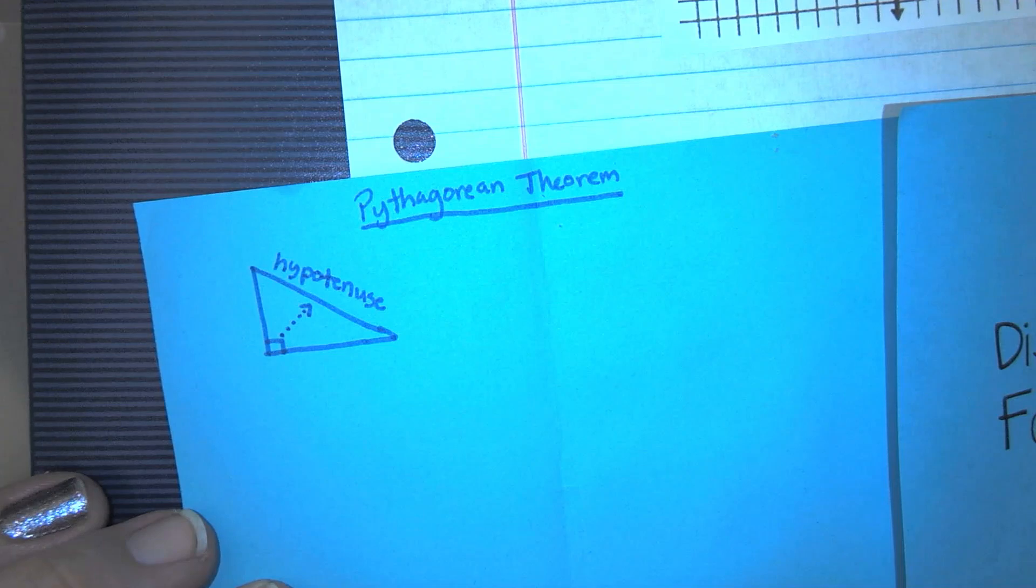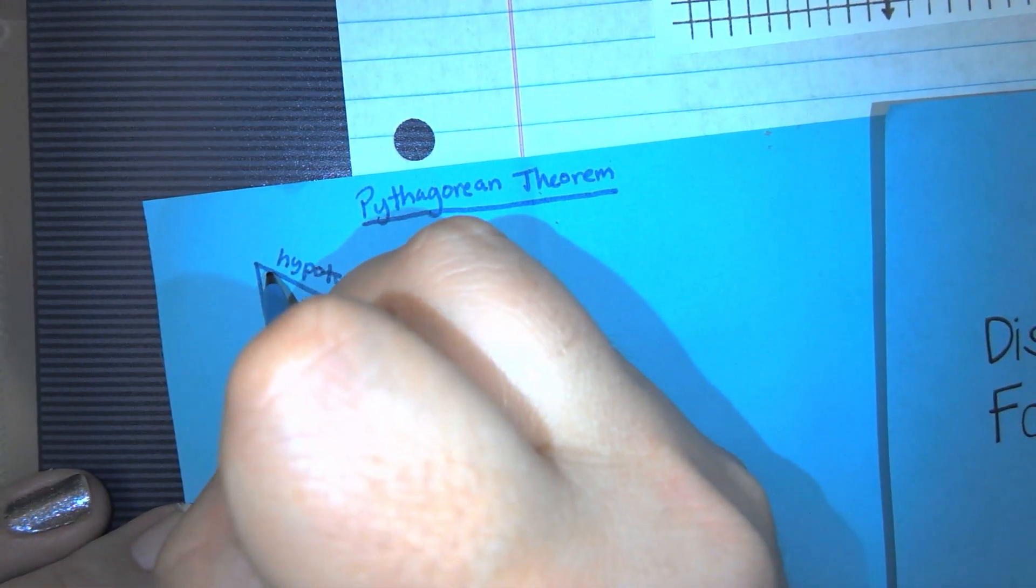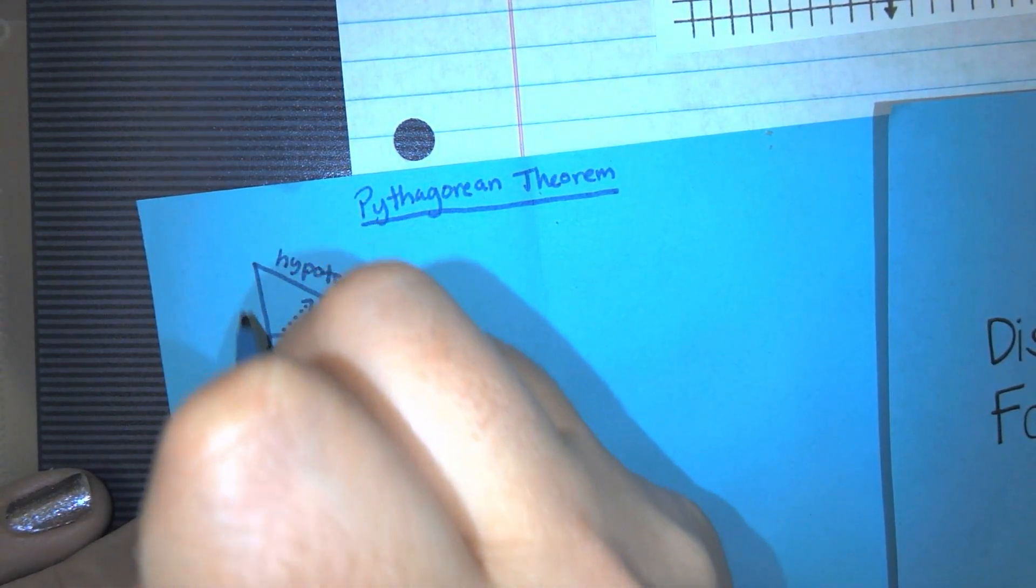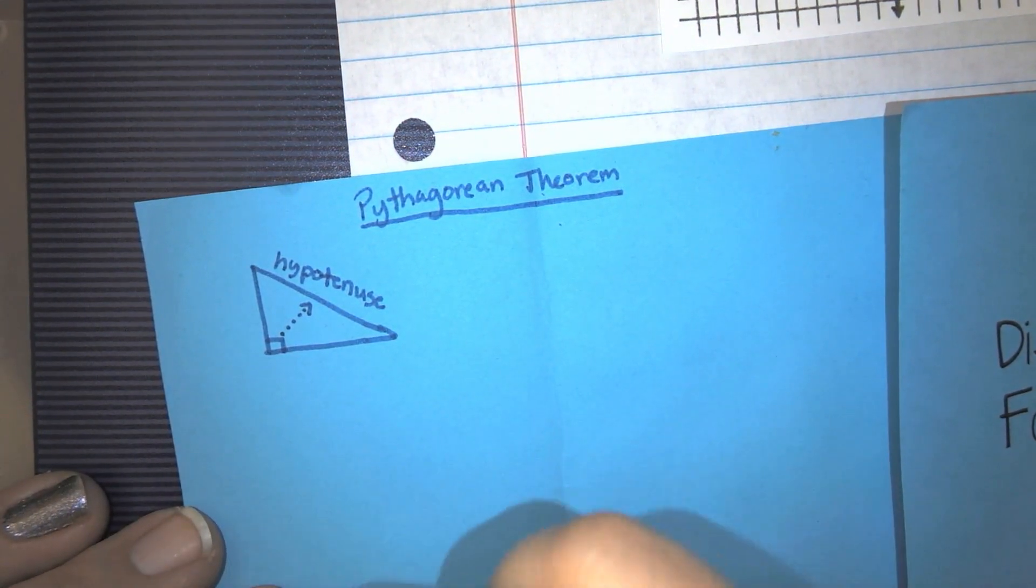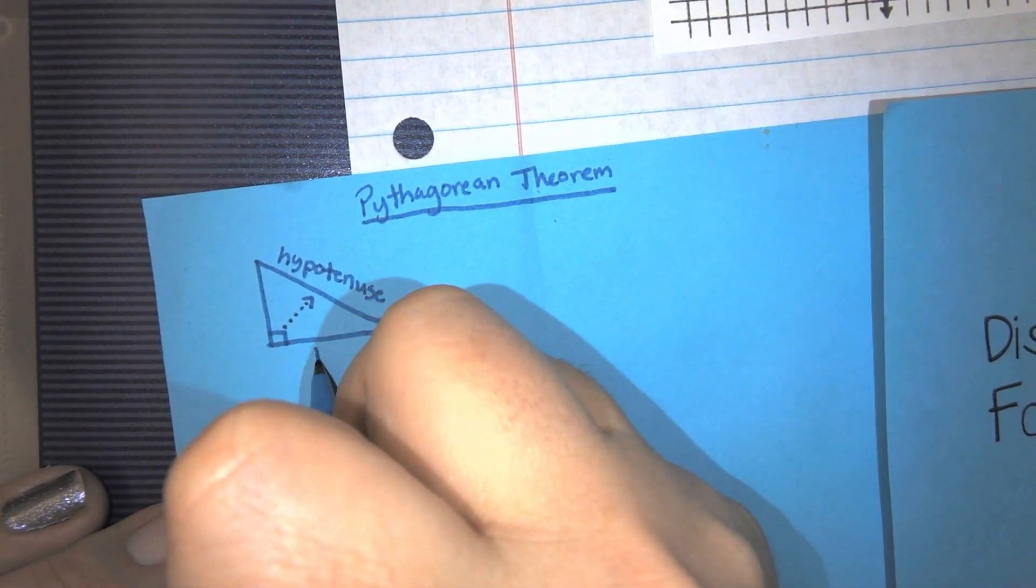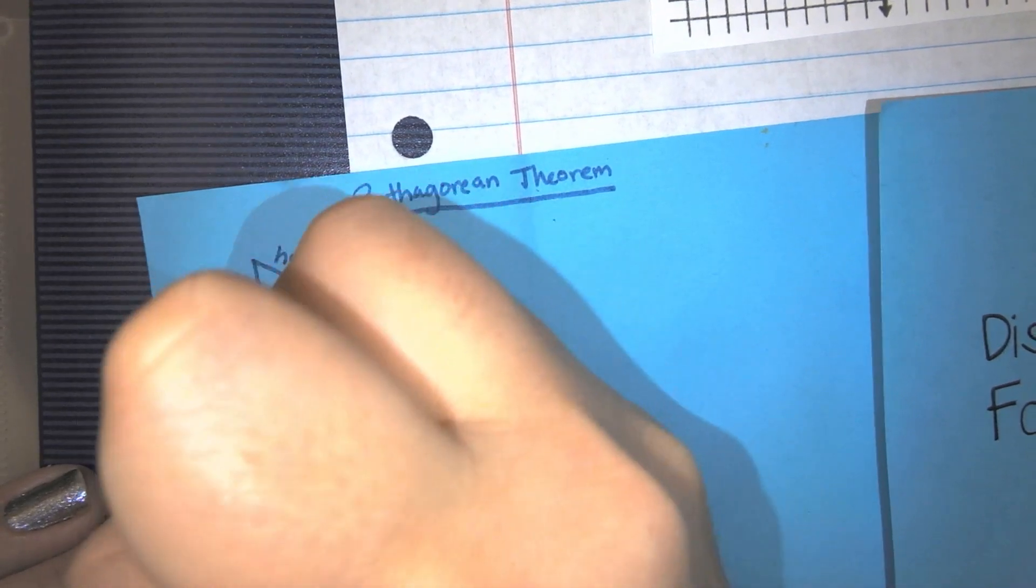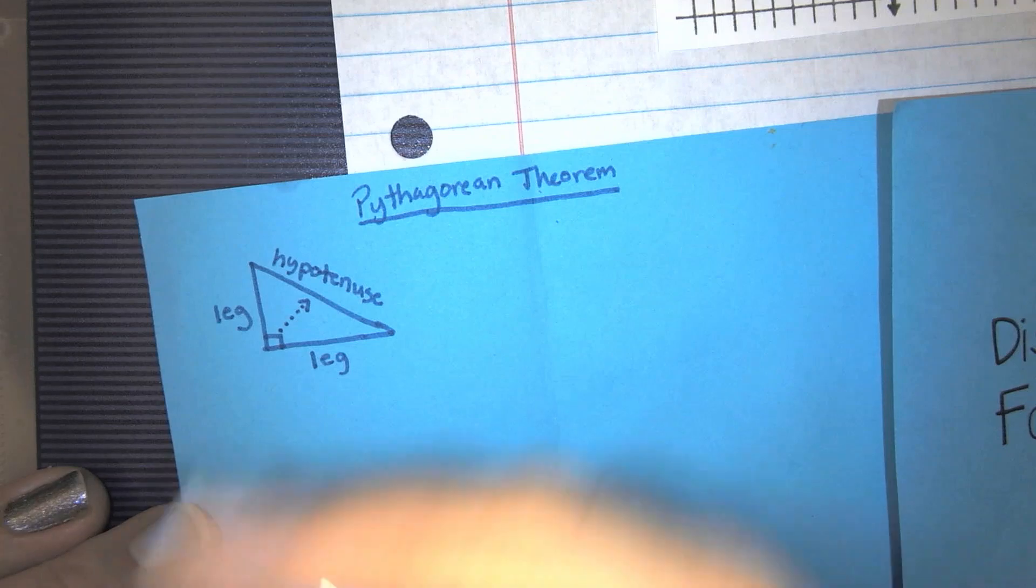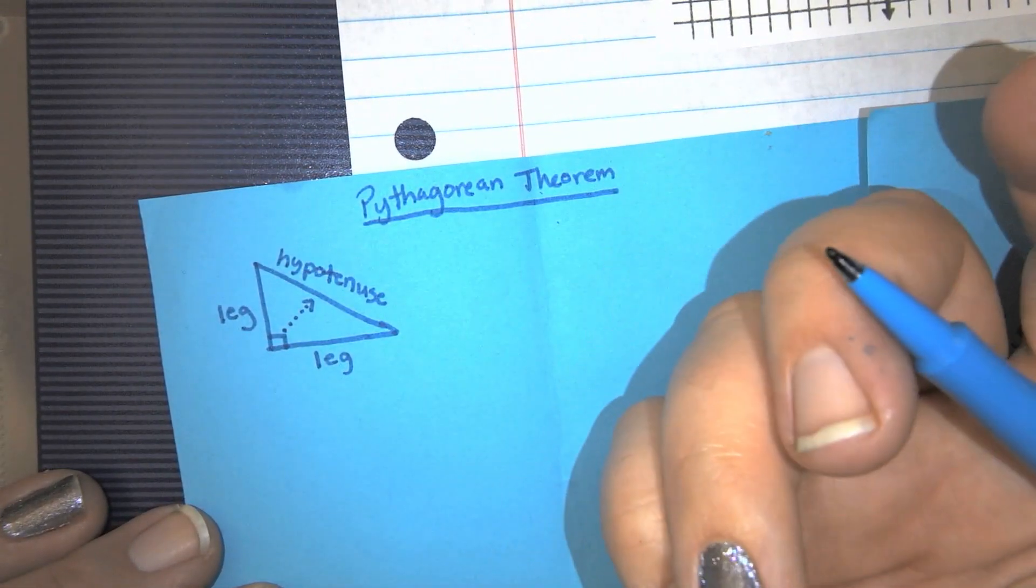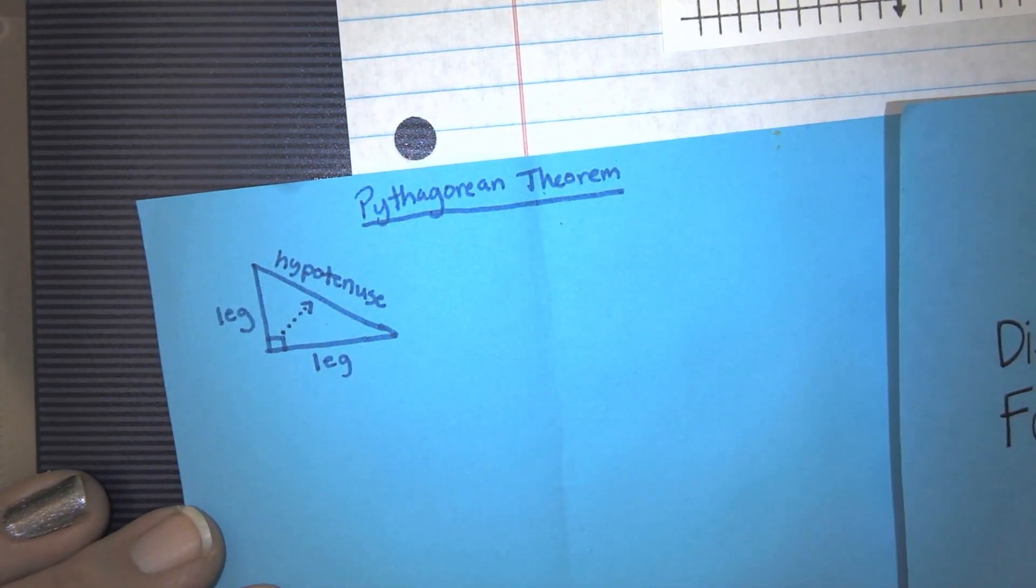Sometimes we just abbreviate that hyp. Then the other two sides, this vertical side, this horizontal side. Now, this is right side up, but sometimes your triangle might be spun around. We call these legs. So this is a leg, and this is a leg. And I like to think of it as a leg, a leg, and a hip. The hips connect our legs, so they kind of make sense.